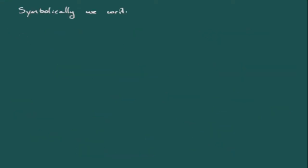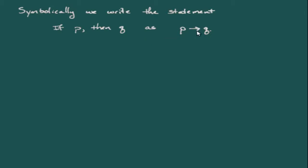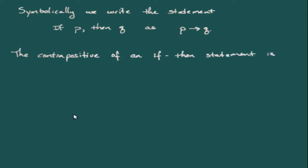If we want to represent if-then statements symbolically, we use an arrow. So the statement 'if-P, then-Q' is represented as P → Q. The contrapositive of that statement is: if-not-Q, then-not-P.